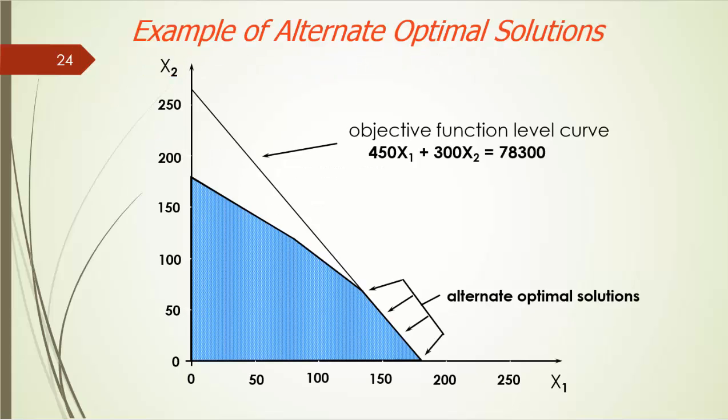The situation with alternate or multiple optimal solutions has been alluded to in a previous video when we introduced graphic approach to solving LP model. In our Blue Ridge example, what if the AquaSpot's unit profit is 450, everything else being the same?